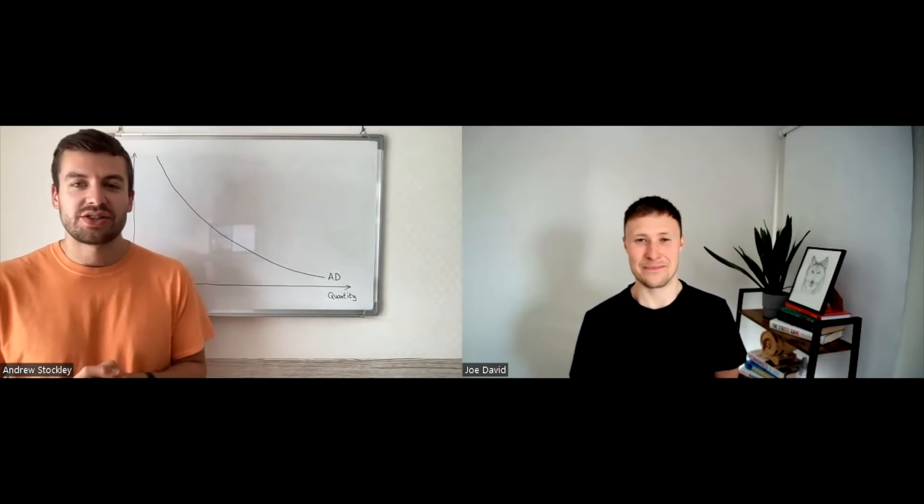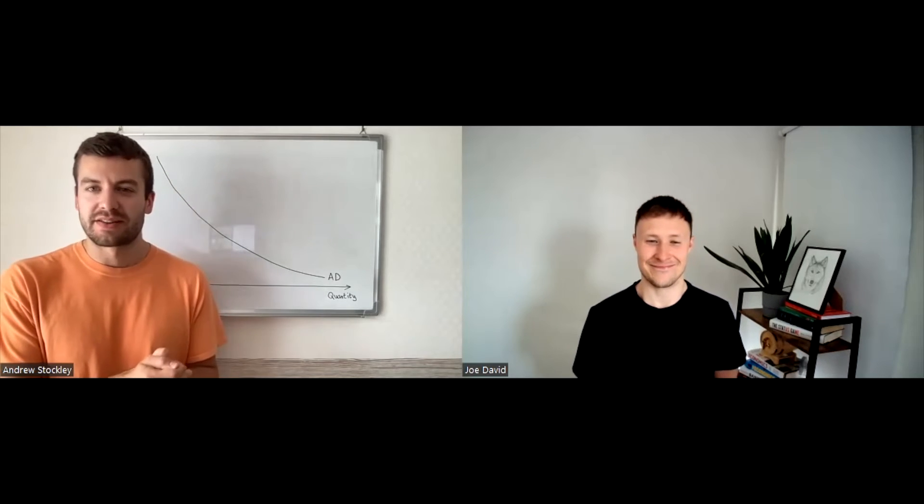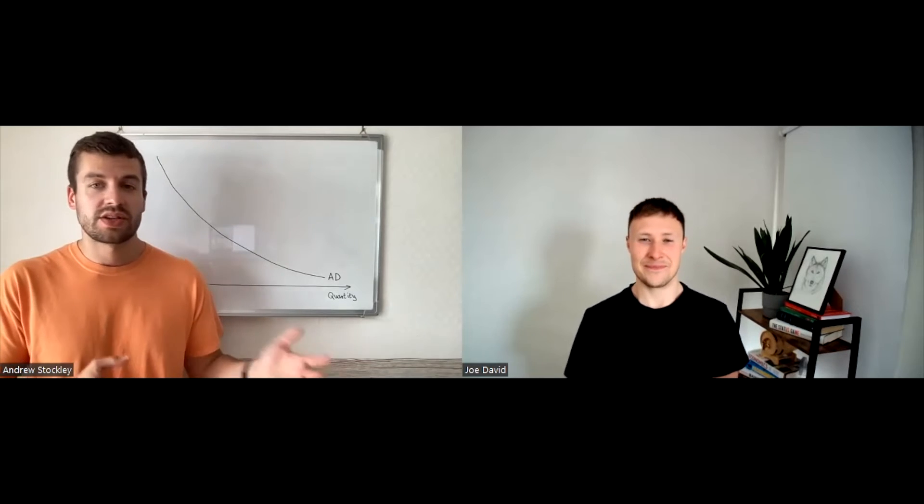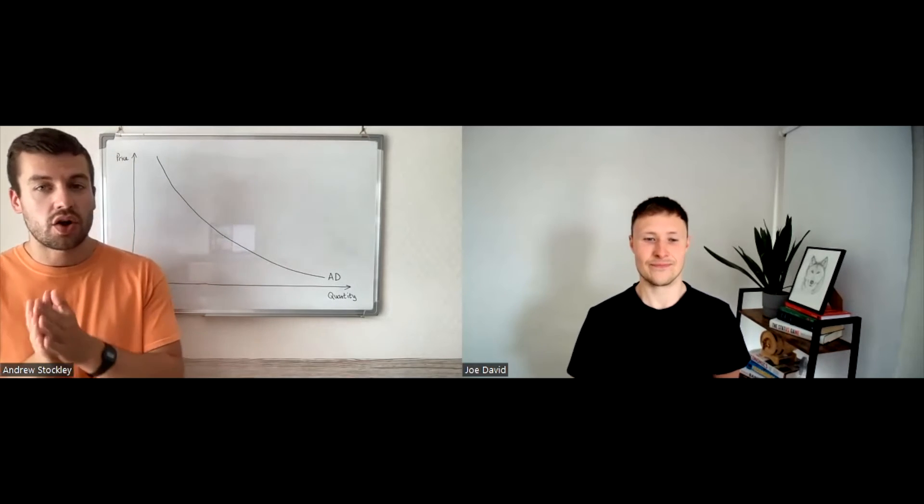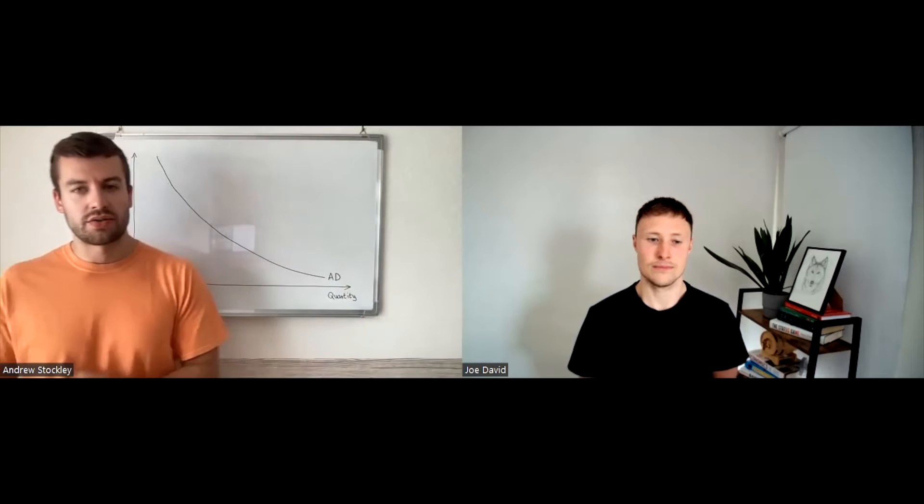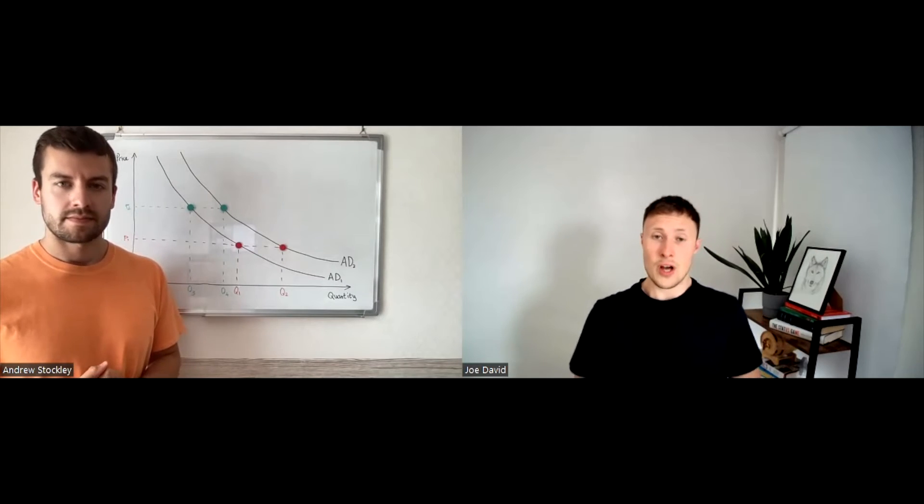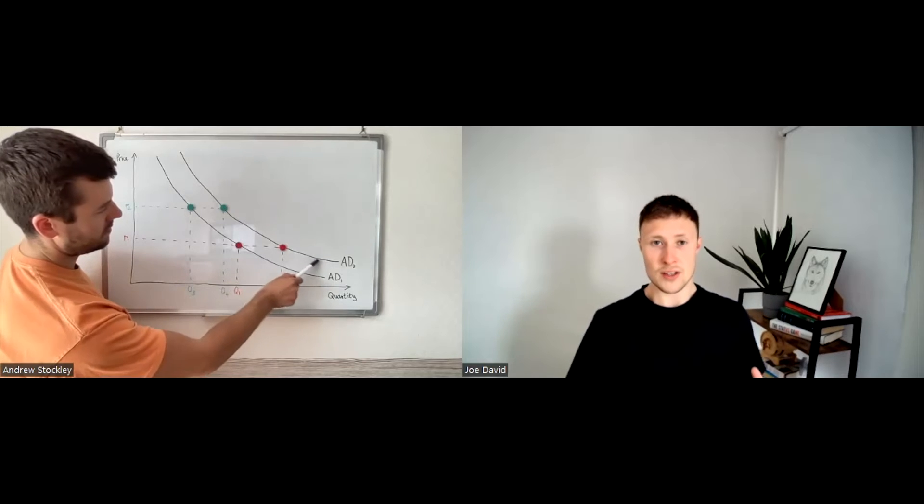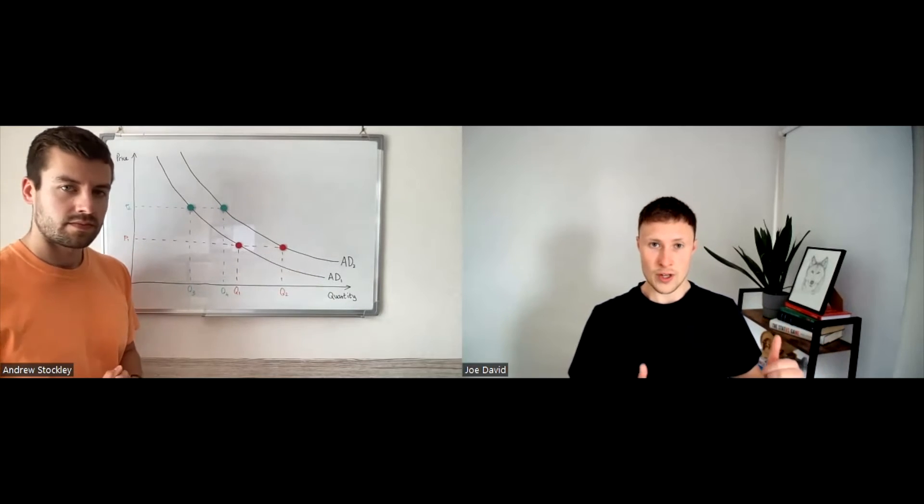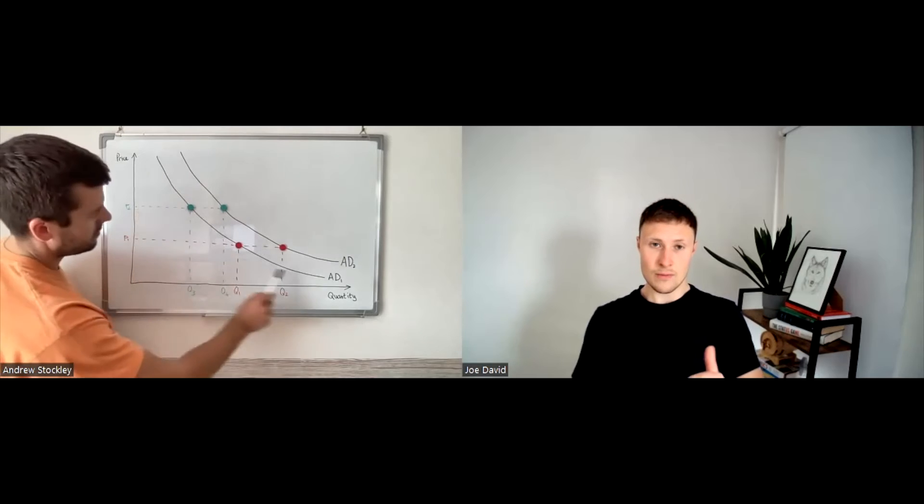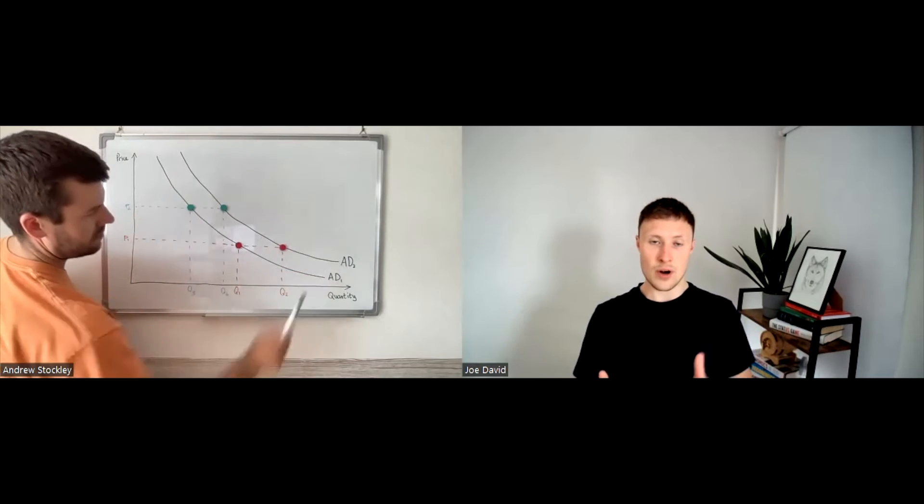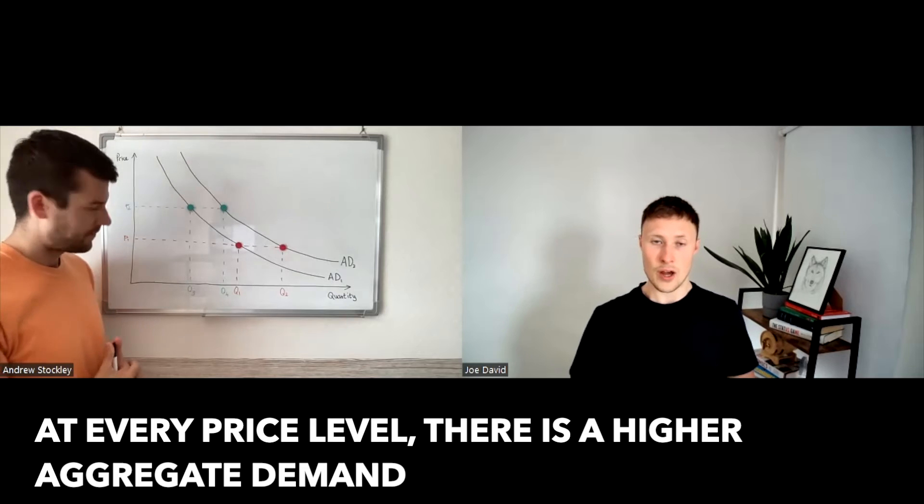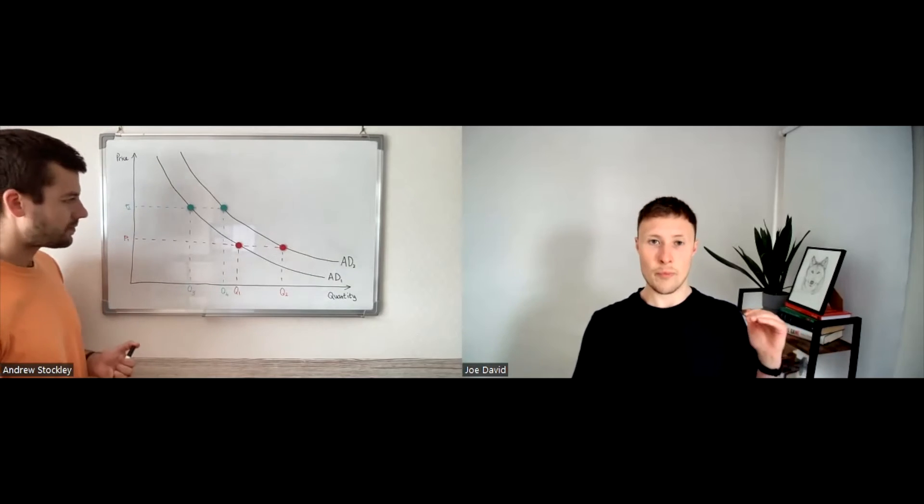We're now going to shift our attention to shifts in the aggregate demand curve, pun intended. Just like the demand curve for individual goods, the aggregate demand curve can also shift to the left or to the right. So Andrew's drawn us a rightward shift in the AD curve on the board. As you can see, the AD1 curve has shifted to the right, AD2. And this means that every price level, there is a higher aggregate demand.